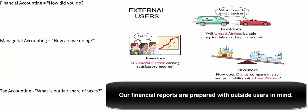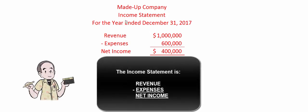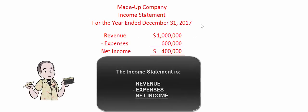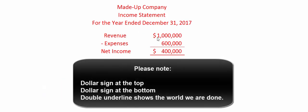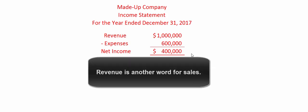We answer that question with four different financial statements. The first is the income statement. It covers a period of time and tells people whether we made money or lost money. We start with the single-step income statement: revenue minus expenses. This made-up company shows that for the year ended December 31st, 2017, their revenue was one million dollars, expenses were six hundred thousand dollars, giving a net income of four hundred thousand dollars. That's all there is to the income statement — it covers a period of time and it's revenue minus expenses.